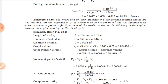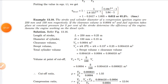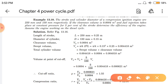Now the second numerical: The stroke and cylinder diameter of a compression ignition engine are 250 mm and 150 mm respectively. If the clearance volume is 0.0004 m³ and fuel injection takes place at constant pressure for 5% of the stroke, determine the efficiency of the engine. Assume the engine works on the diesel cycle.